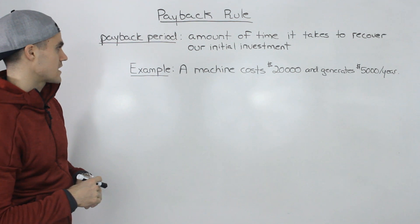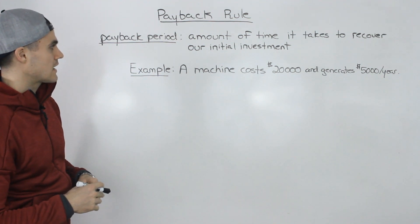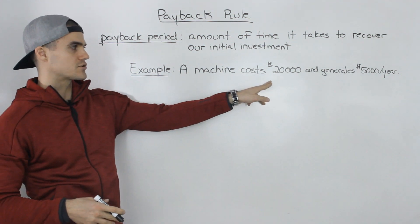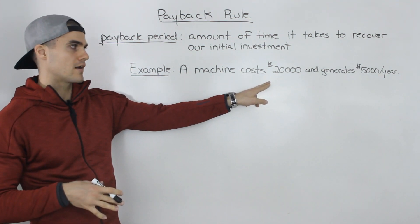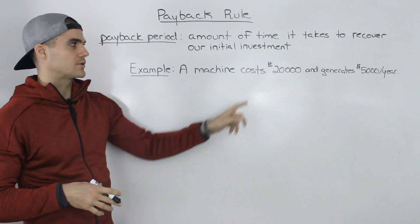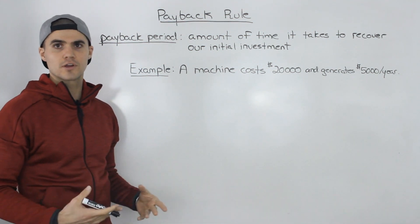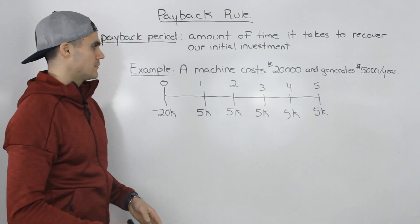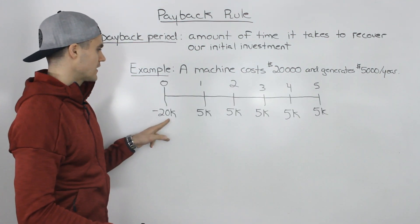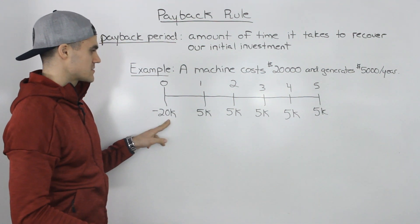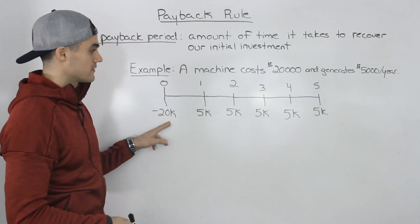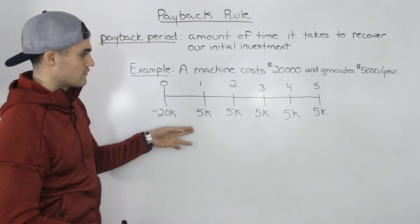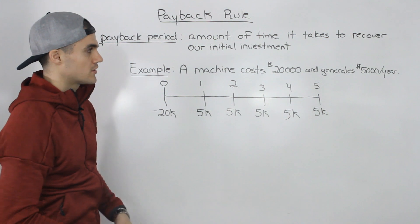Let's illustrate that through an example. Let's say a machine costs us $20,000 today to buy and it's going to generate $5,000 per year. Showing this on a timeline, negative $20,000 is spent at time zero today, and then this machine generates $5,000 per year.